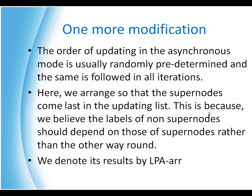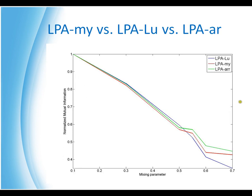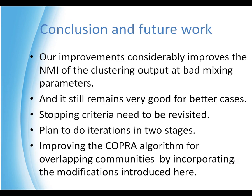We arrange the update order so that super nodes come last in the updating list. The reasoning is that the labels of non-super nodes should depend on those of super nodes, so we first update non-super nodes and then super nodes, even within one iteration. We denote the results of this change as LPA ARR. We see that LPA ARR is better than our original method and even better than LPA suggested by Leung et al., which proposes node preference in a somewhat similar way. The green line is actually better than the red and blue ones.